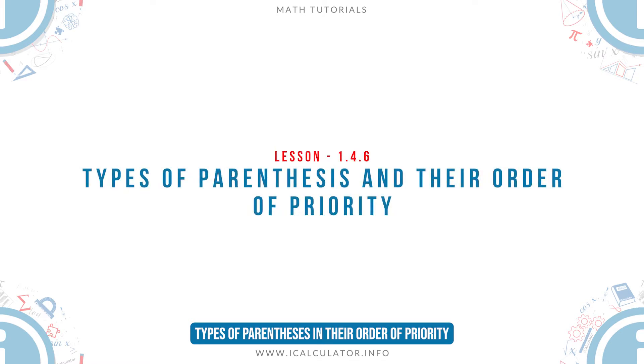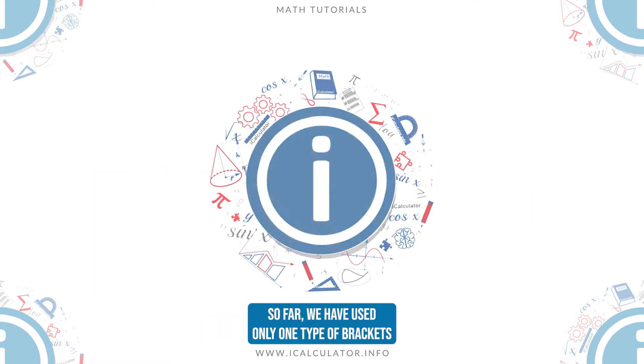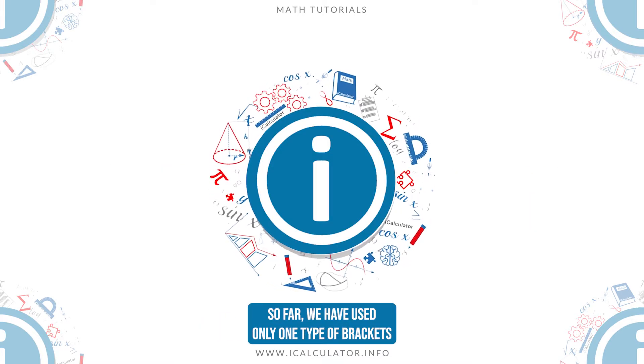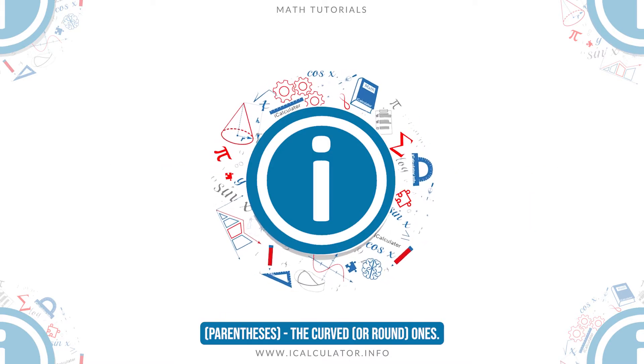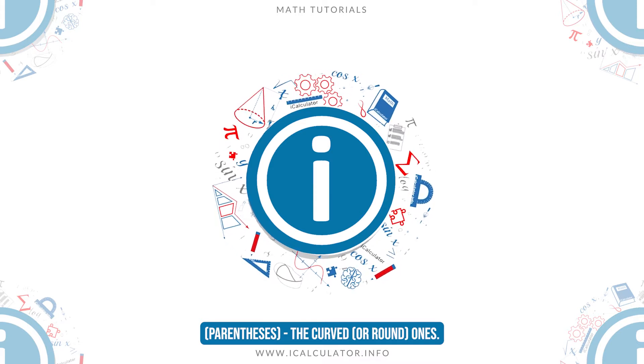Types of Parenthesis and Their Order of Priority. So far, we have used only one type of brackets, parentheses, the curved or round ones.